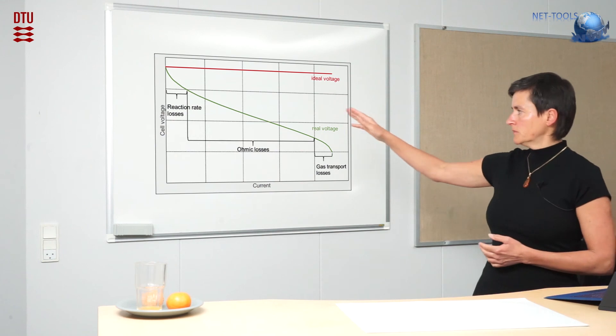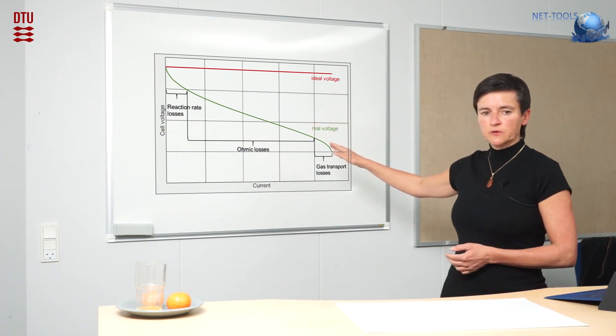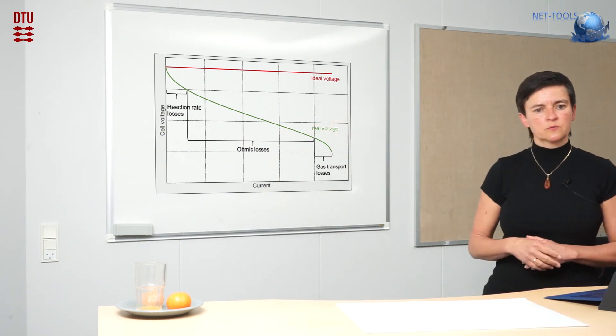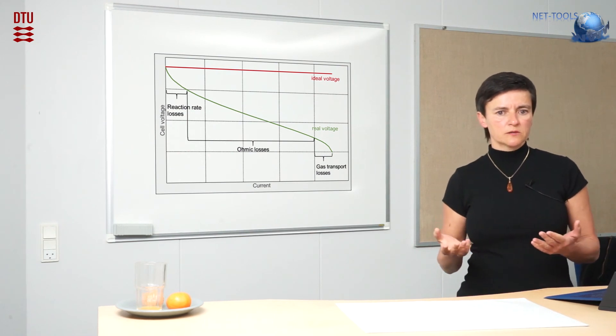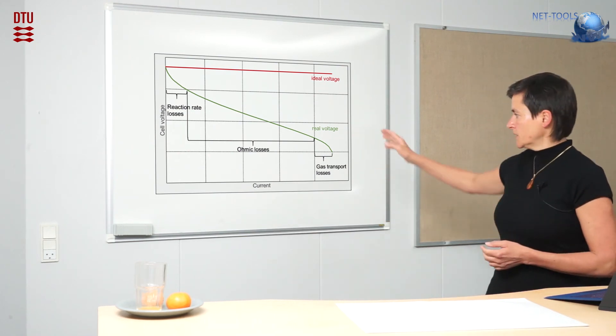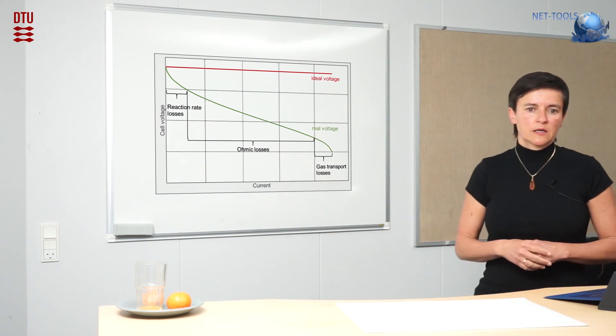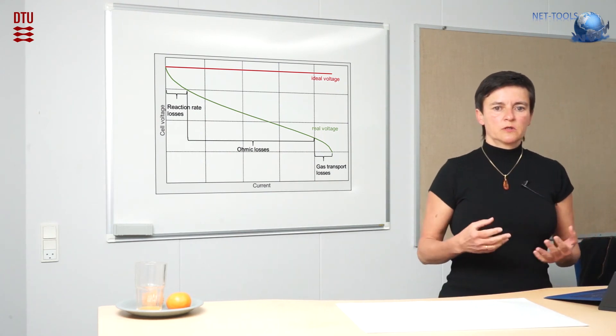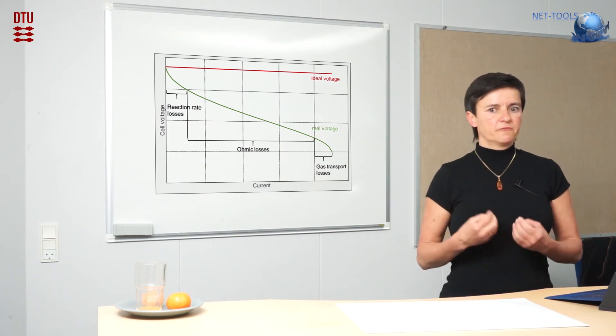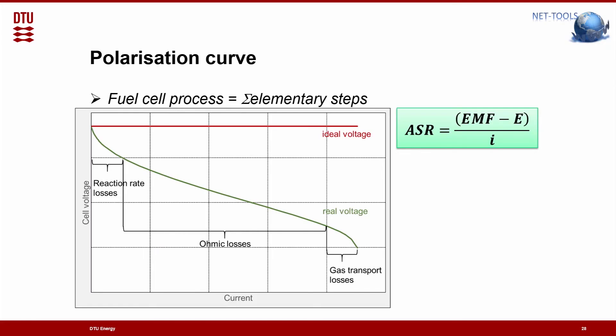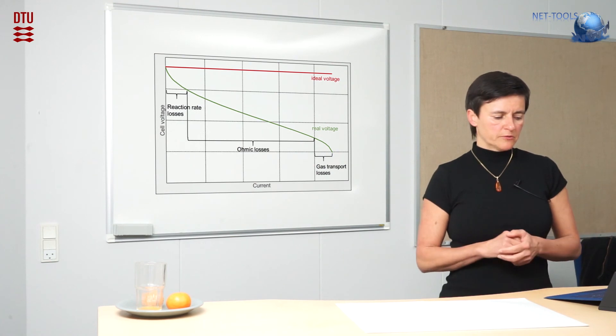Then when we increase the current even further, we see a kind of linear range which corresponds to ohmic losses. And then when we increase the current even more, the curve bends down, which corresponds to gas transport losses. So we actually have a lack of fuel at the interfaces where the oxidation and reduction occur. So this is a typical polarization curve.